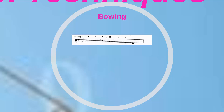Players are normally taught to start a passage down bow when it begins on an accented beat, particularly the first beat of a measure, and to start up bow when an unaccented note precedes an accented beat. Passages that observe this normal pattern do not need up bow and down bow symbols. If the normal pattern is to be reversed, alert the player by drawing the up or down bow symbol above the first note of the passage.